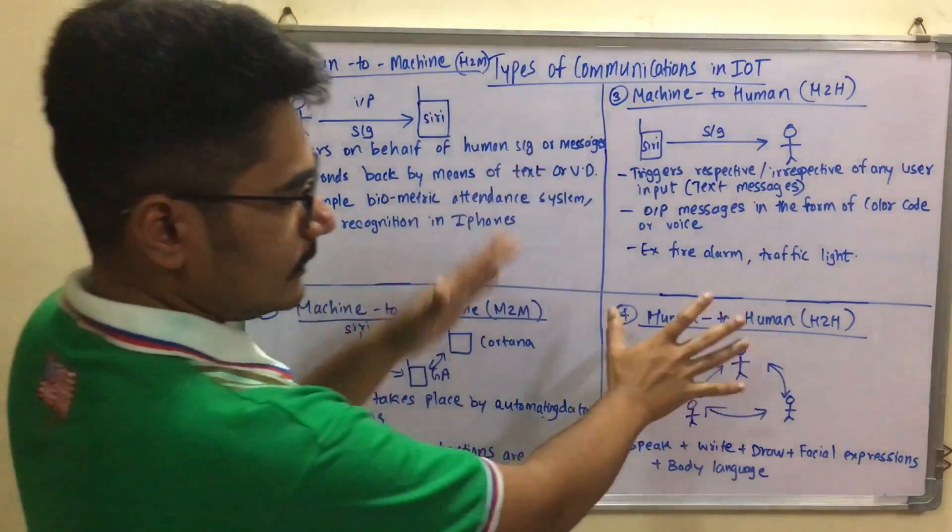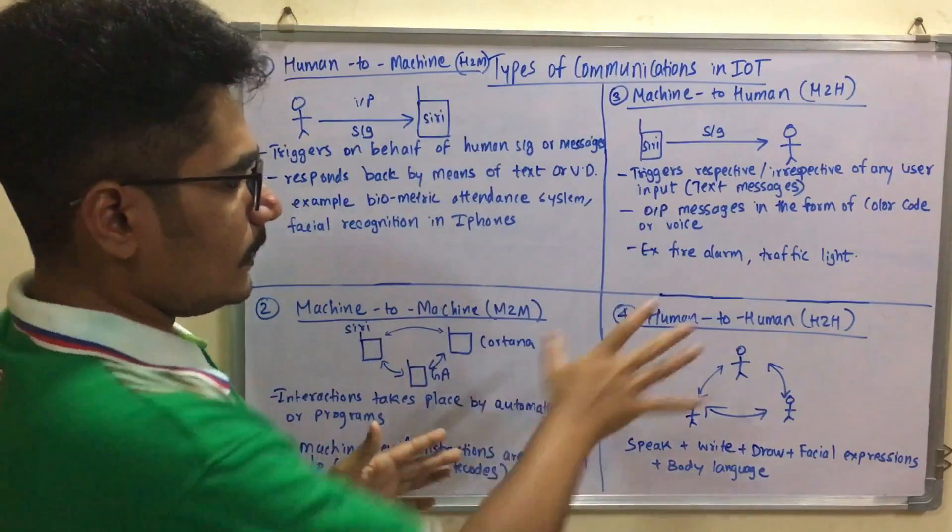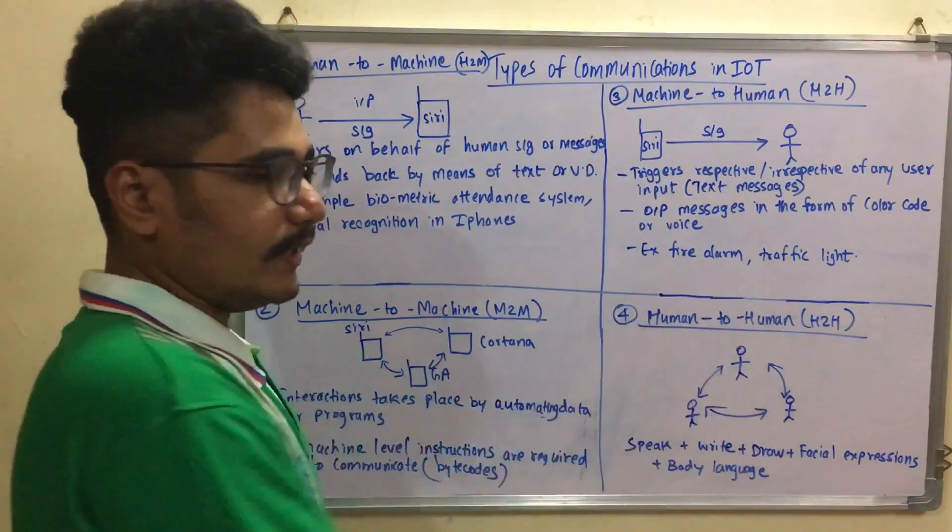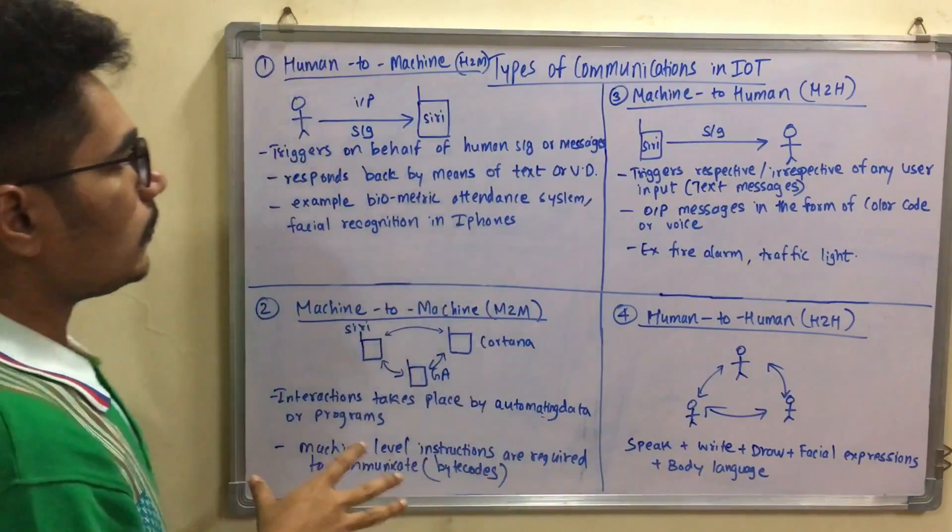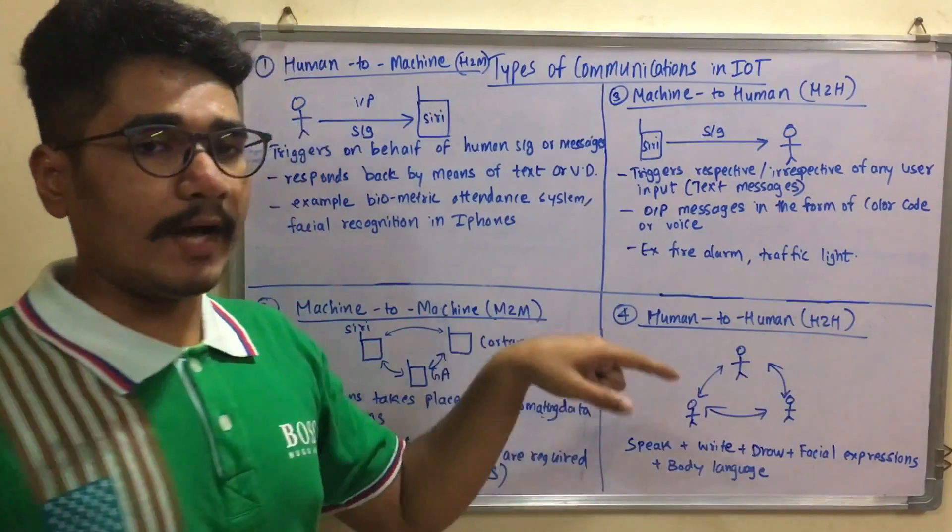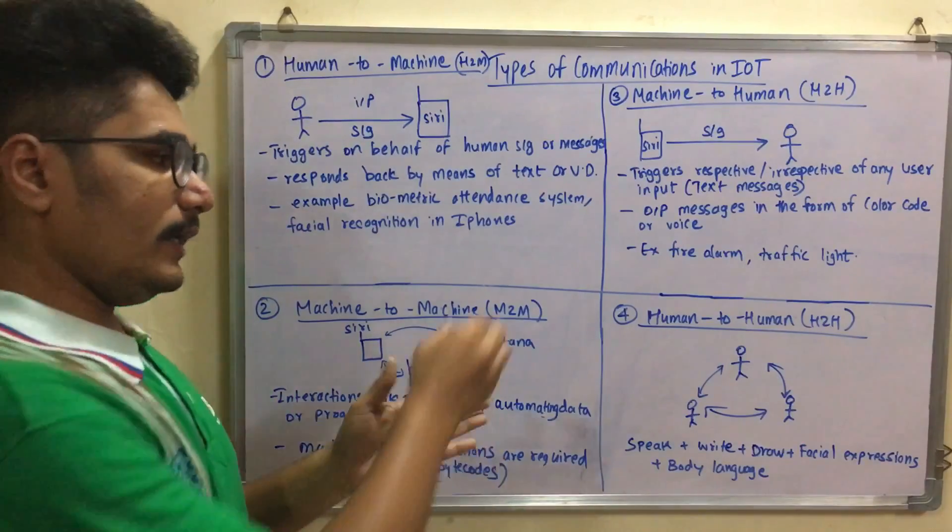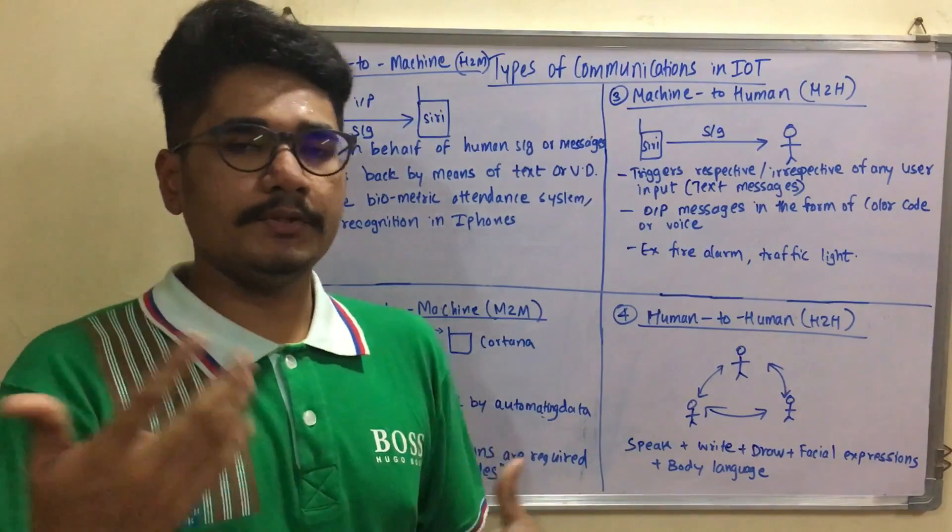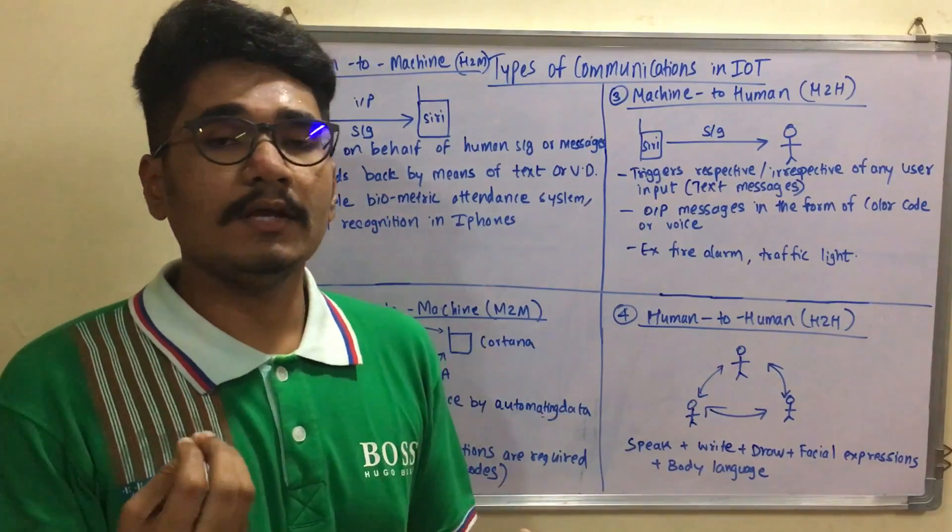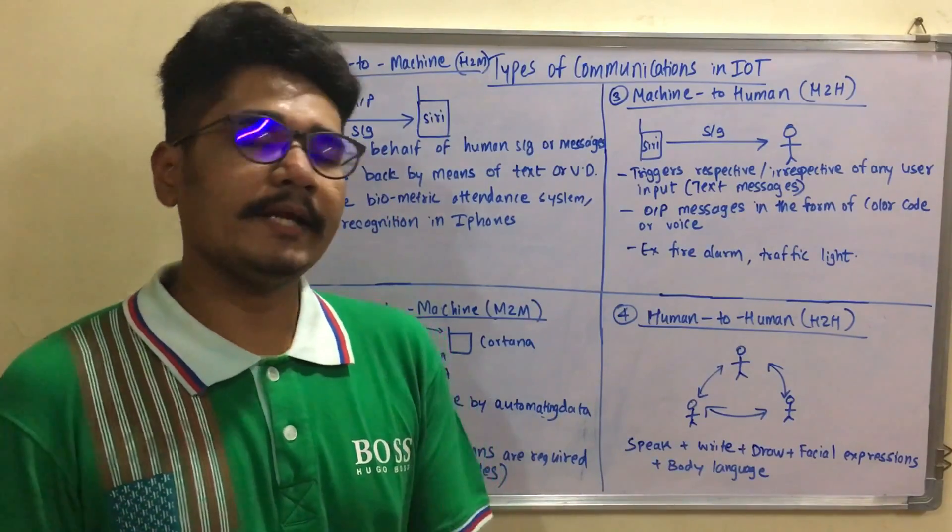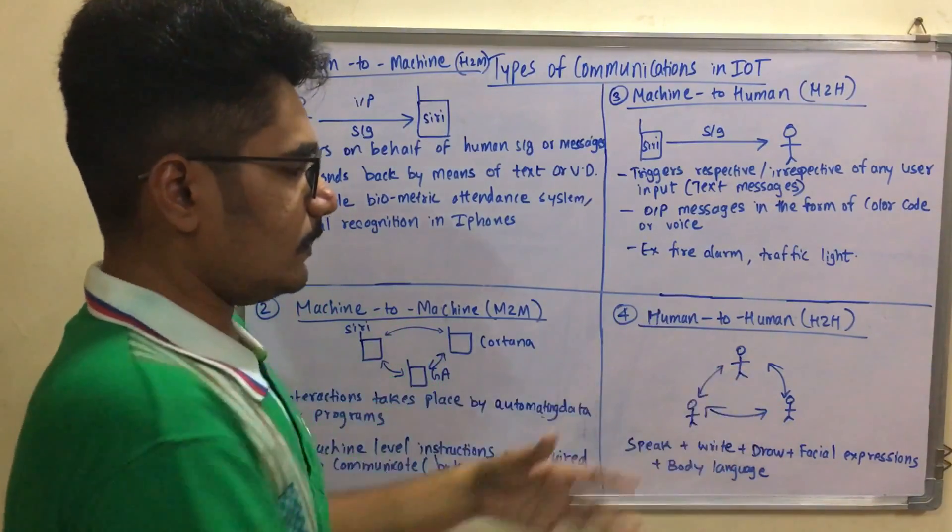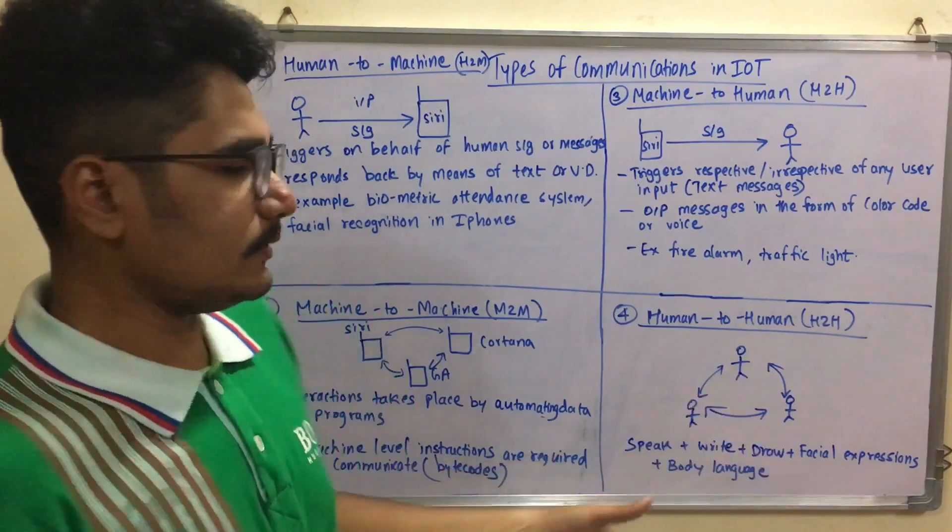Then we have Human to Human interaction. This is separate from the other three types because it doesn't include machines or devices. In the previous three types, there's always a machine involved. In H2H there's no machine, so this comes into the category of IoE, Internet of Everything. You have human beings communicating through languages - speaking, writing, drawing, facial recognition, expressions, body language, or any kind of behavior. This is the most simplest form of communication. Although human beings are involved, you don't use any devices.